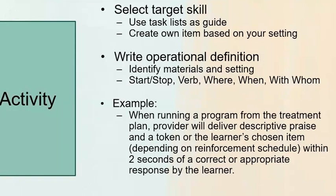So here's an activity. Now this is recorded, so obviously I have no idea if you're going to do the activity or not, but if you'd like to pause for a minute and work on this. Select a target skill — you can use the task list as a guide or create your own particular skill based upon your setting. Write an operational definition that identifies the materials and the setting — where and with what your trainee is going to perform this skill. I always teach trainees that our operational definitions include the start and stop of the behavior, the verb, where, when, and with whom the behavior occurs.